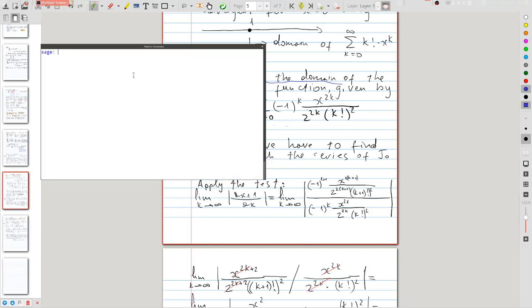Here is SageMath. I'm running it from the terminal, and let's start by plotting the j0 Bessel function between 0 and 10.